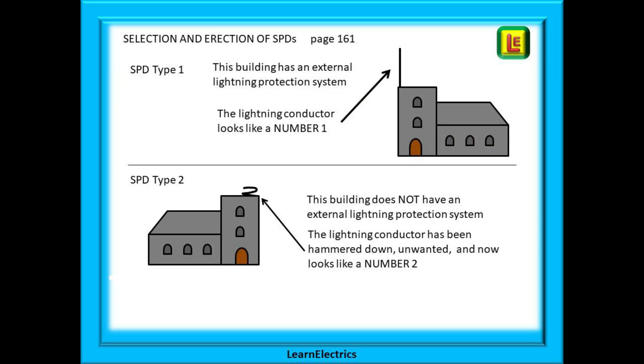This is how I remember the difference. I imagine a church with a big lightning conductor sticking up into the sky. To me it looks like a straight line, a number one, so this is a type 1 SPD.